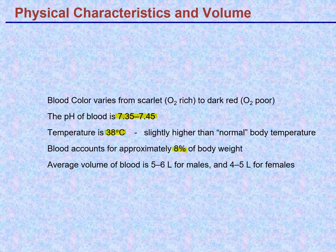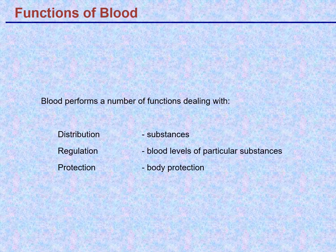In males, blood volume is five to six liters depending on body size; in females, four to five liters. You can get a large female and a small male where the female will have more blood than the male — there's a range. That's the typical kind of range you get.